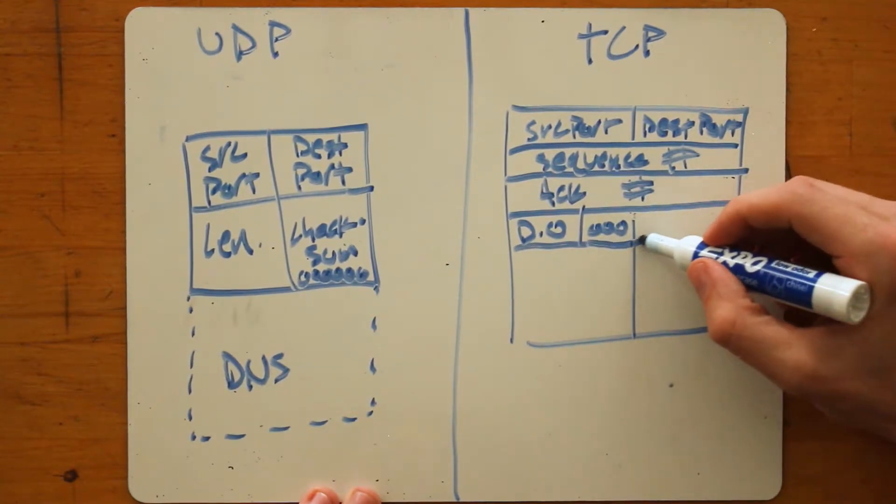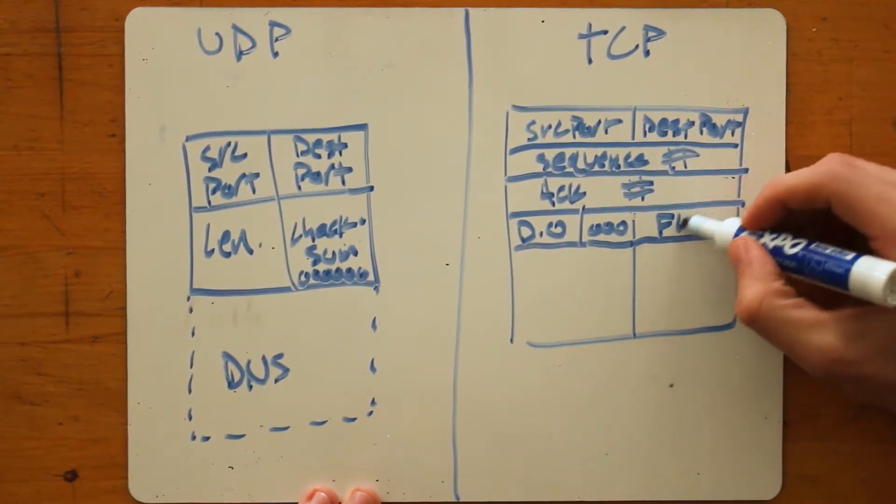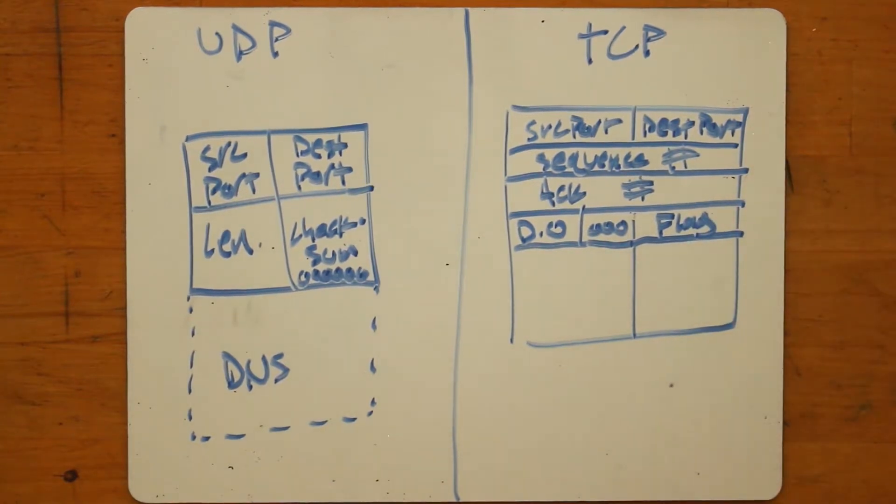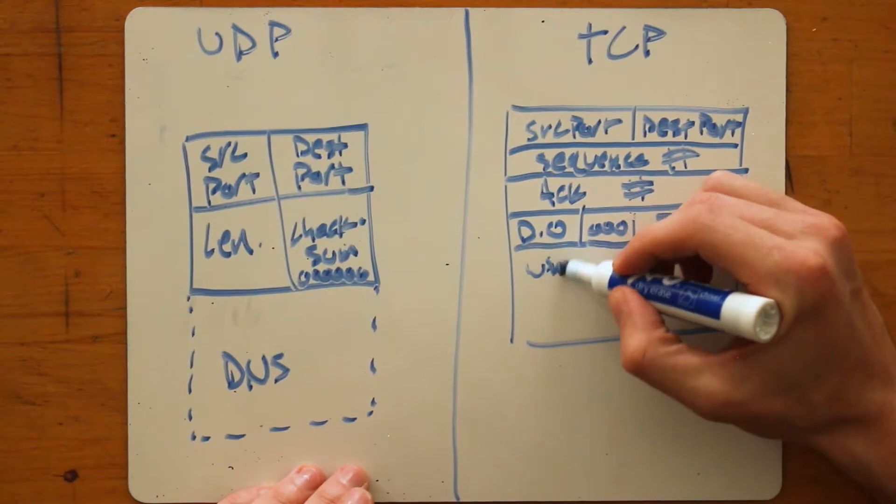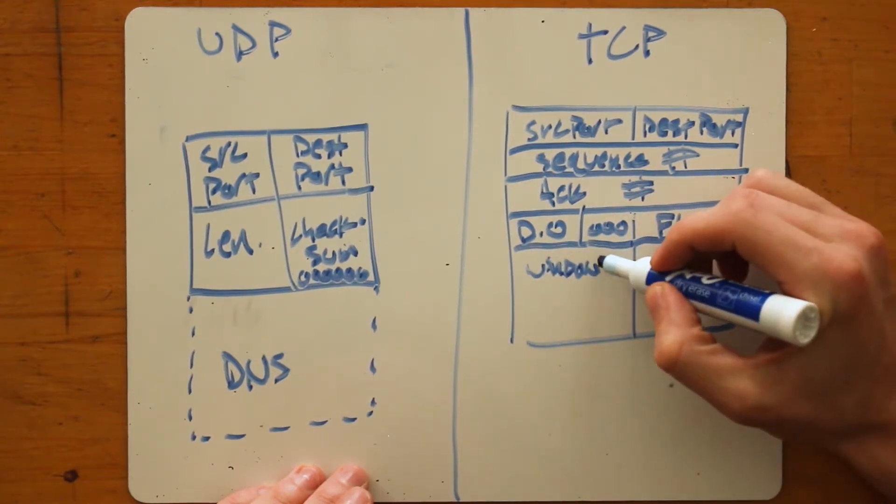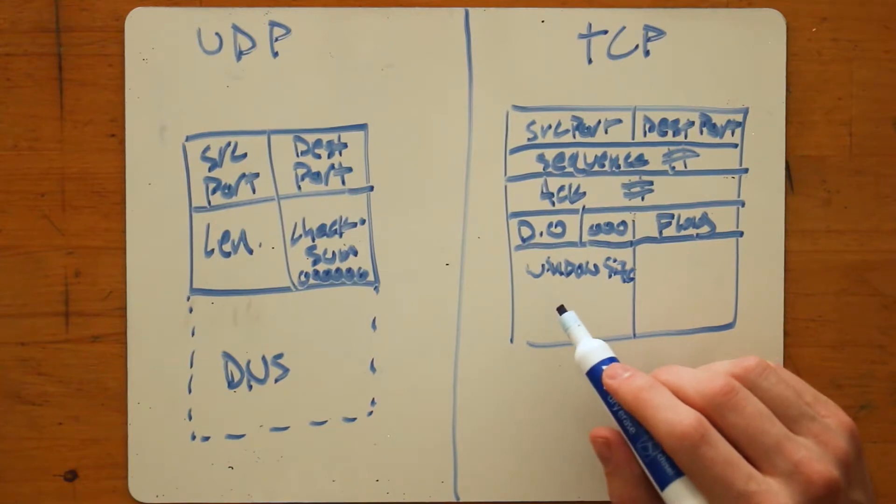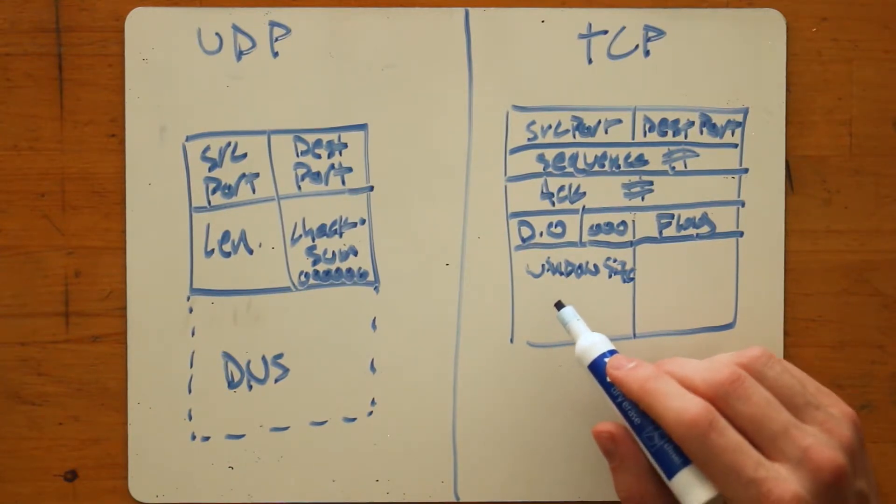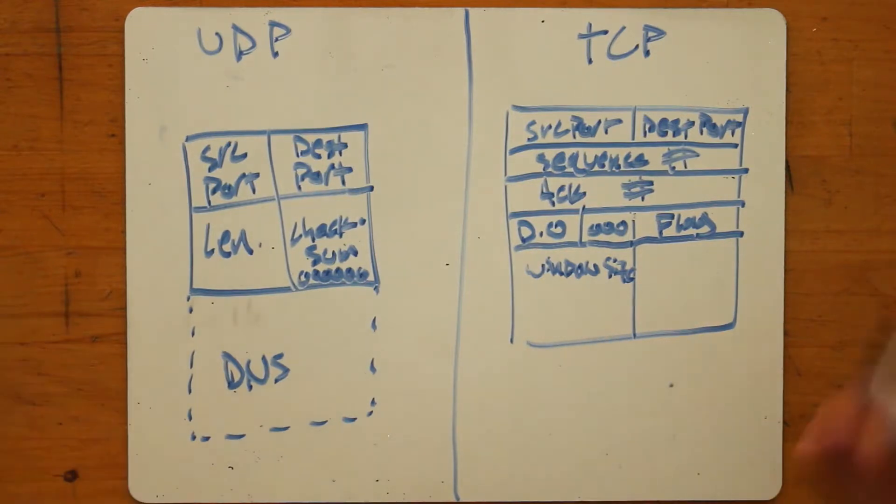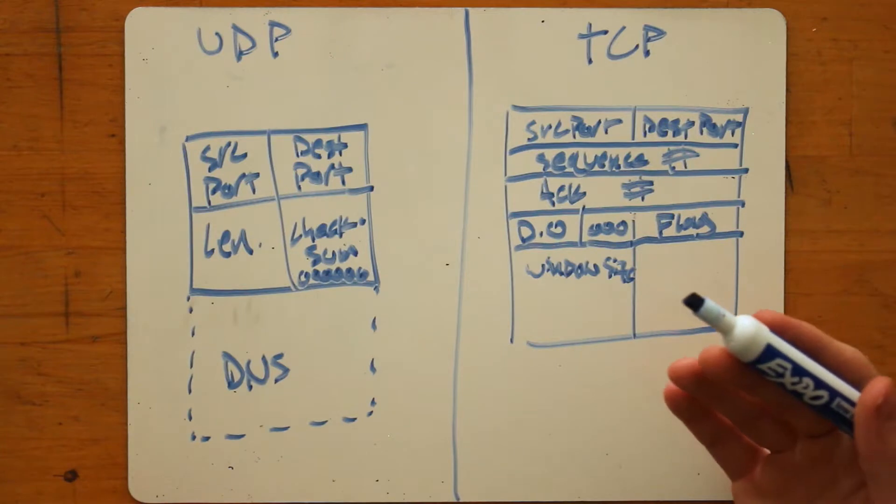Then you've got a series of flags. And these are single bit values that have contextual meaning, depending on which ones are set and when they're set. Then you've got a window size, which has to do with TCP's congestion control mechanisms. This allows you to send data faster or slower depending on certain parameters of the connection.